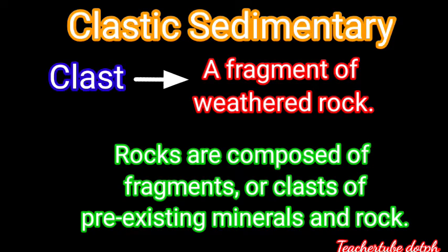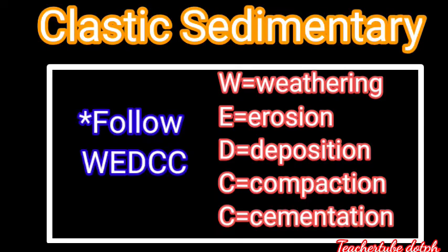Clastic sedimentary rocks — the term comes from the word 'clast,' meaning a fragment of weathered rock. Rocks are composed of fragments or clasts of pre-existing minerals and rock. Clastic sedimentary rocks follow the formation process WEDCC: W for weathering, E for erosion, D for deposition, C for compaction, and the last C for cementation.